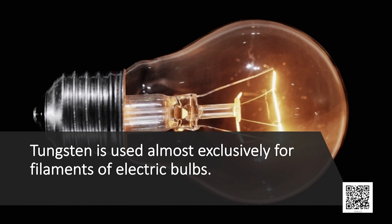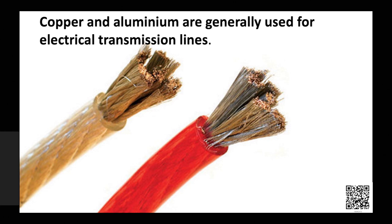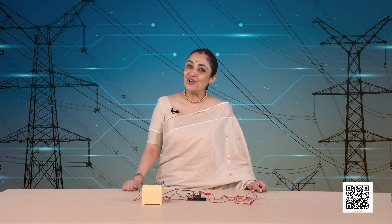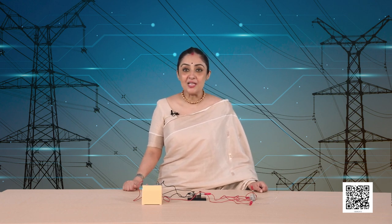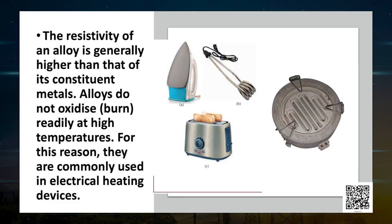Insulators like rubber and glass have resistivity of the order of 10¹² to 10¹⁷ ohm-meter. Both resistance and resistivity of a material may vary with temperature. Have you ever wondered why tungsten is used as the filament of a bulb, or why copper wires are used as connecting wires? Alloys do not oxidize or burn readily at high temperatures, so they are commonly used in electrical heating devices like electric iron and toaster.